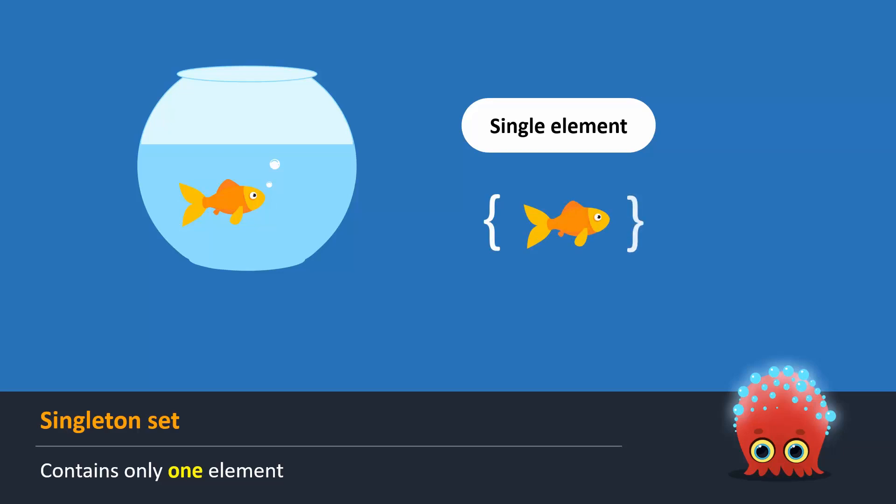Now consider the aquarium on the right. You can see that there is no fish in this aquarium. It means that the aquarium is empty. When a set contains no element, we can call it an empty set.